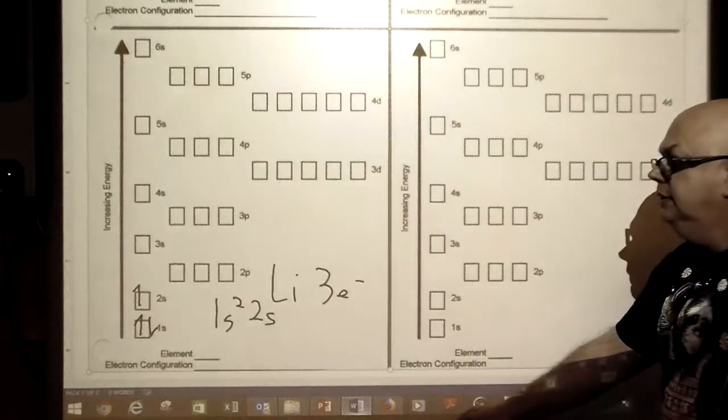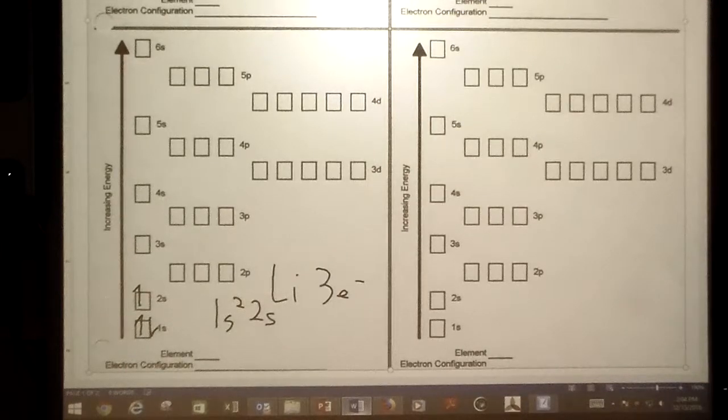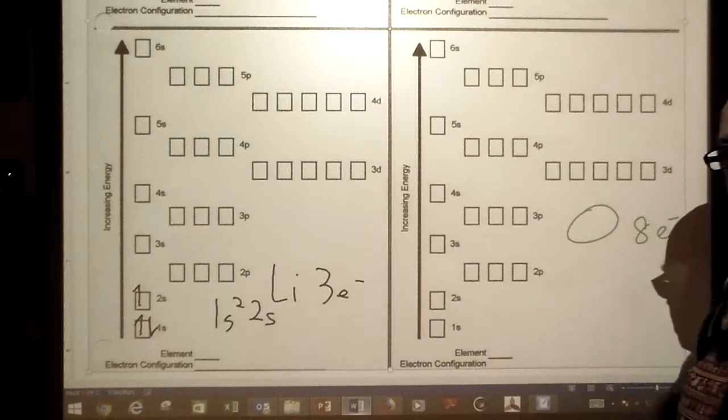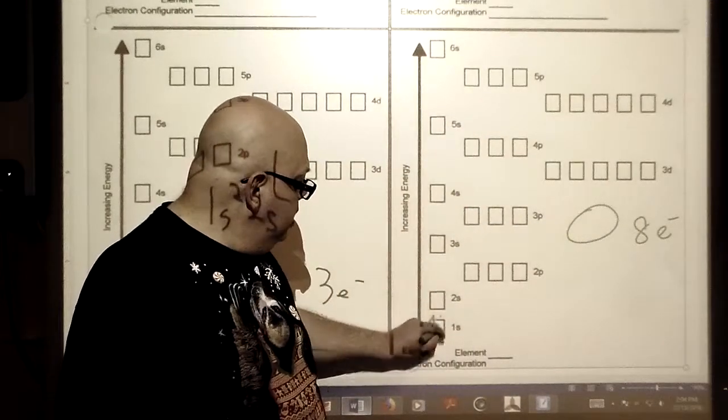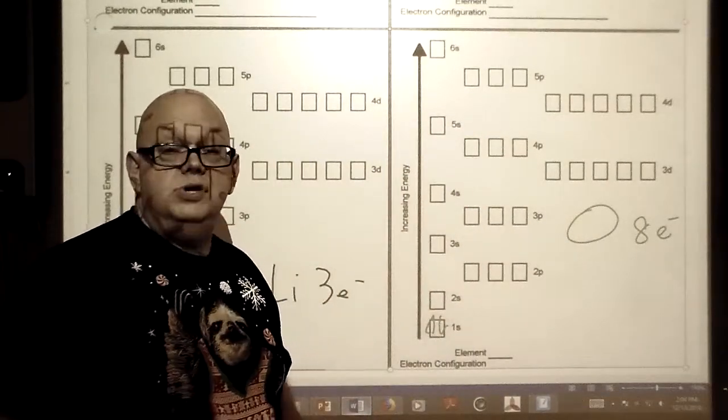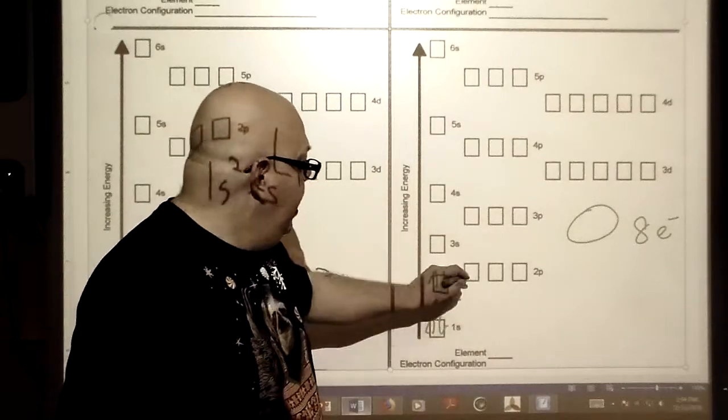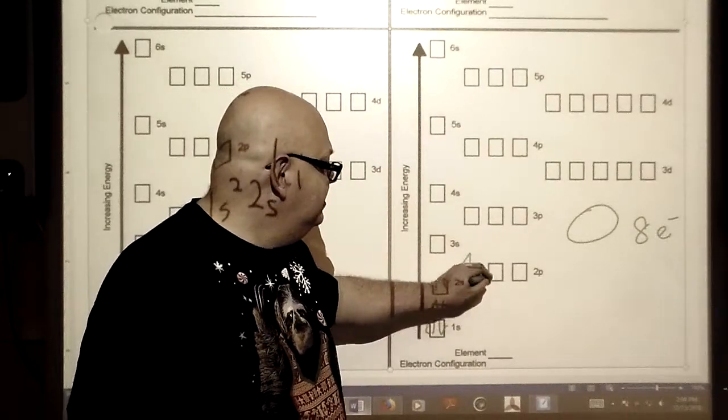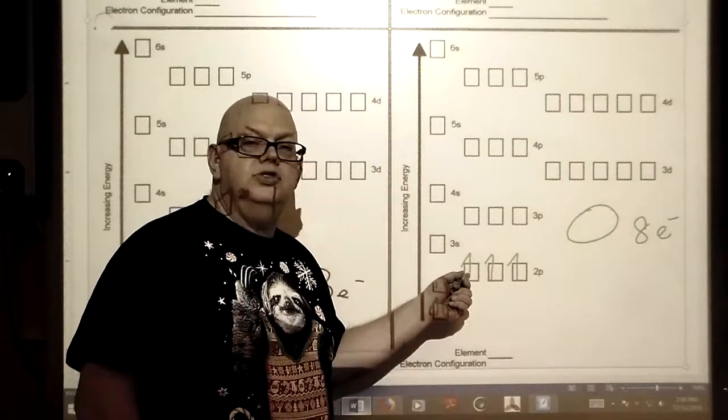Let's pick a bigger one. I'm going to go for oxygen. Oxygen has eight electrons, we kind of need it to survive. We're going to do one, two for the first level, three, four, and then we've got to come here to the p: five, six, seven.